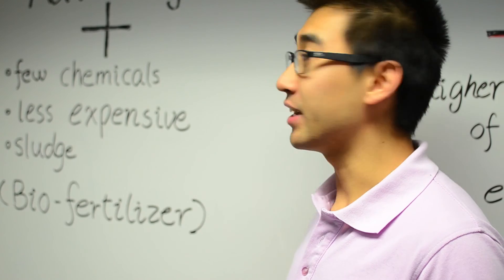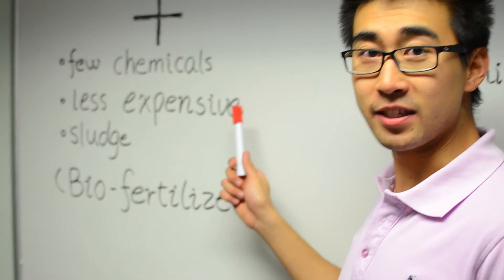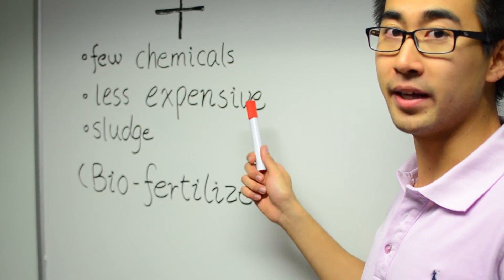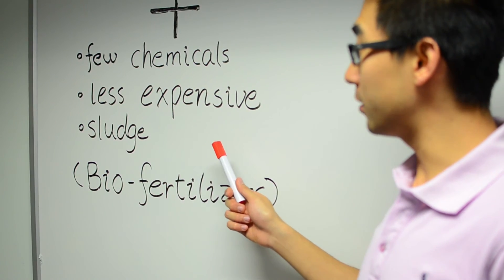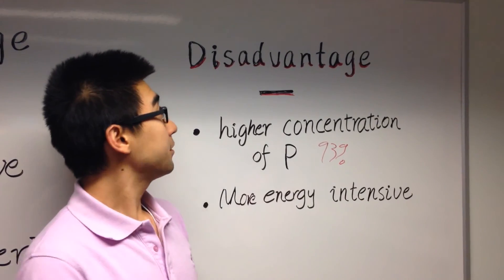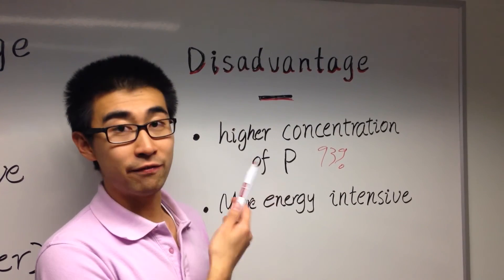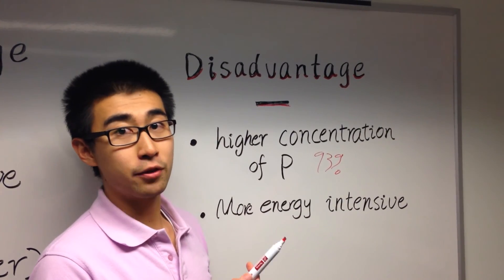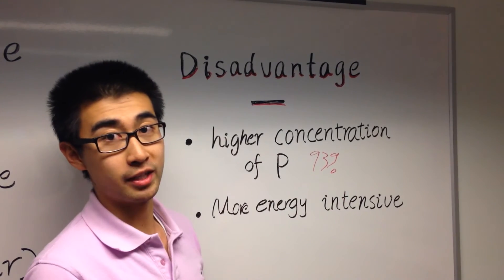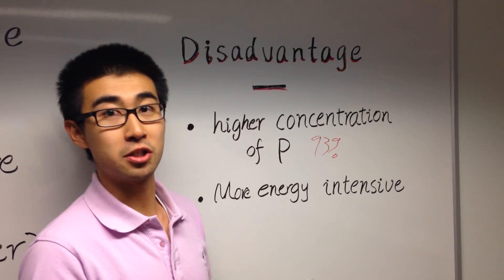When it comes to phosphorus removal, EBPR has a few advantages and disadvantages when compared to the chemical method. On the advantage side, EBPR requires fewer chemicals as it's a purely biological process, and as a result, it's less expensive because there aren't chemicals to replenish continuously. Further, the sludge can be used as a biofertilizer which can be reapplied to the fields because there are no chemicals involved. On the disadvantage side, the concentration of phosphorus removed tends to be lower, although modern methods still accomplish a 92% removal rate. Also, it is more energy intensive as the aerobic part of the process requires constant oxygen sparging.